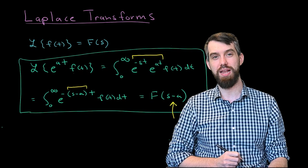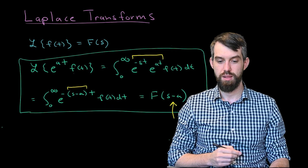In other words, I have derived this translation property: the Laplace transform of an exponential times a function is just the same Laplace transform but translated — it's no longer F(s), it's F(s-a). This is referred to as the translation property of the Laplace transform. Let's see how we can use this in some examples.